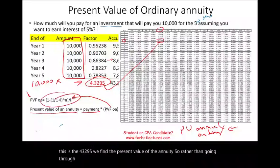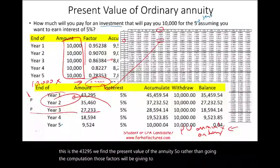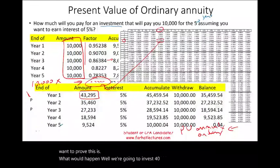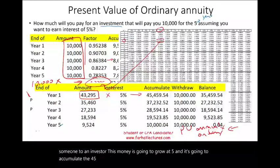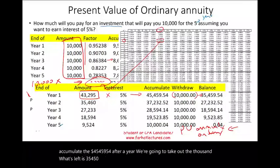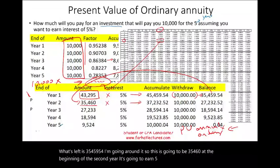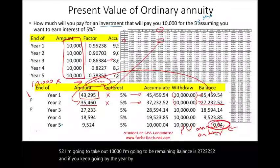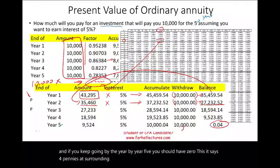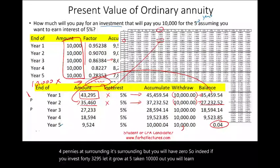To prove this: invest $43,295 today. It grows at 5% to $45,459.54 after one year. Take out $10,000; what's left is $35,460. That earns 5% to become $37,232.52. Take out $10,000; the remaining balance is $27,232.52. If you keep going through year five, you'll have zero — just a few cents of rounding. So if you invest $43,295, let it grow at 5%, and take out $10,000 each year, you earn exactly 5%.